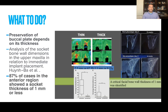So what to do? Preservation of the buccal plate depends on its thickness. Analysis of socket wall dimensions in the upper maxilla showed that most cases — actually 87 percent — had a socket thickness of one millimeter or less. This is a big problem especially in the aesthetic zone, and this is where the socket shield technique comes into play, which we will discuss next in Chapter 2.